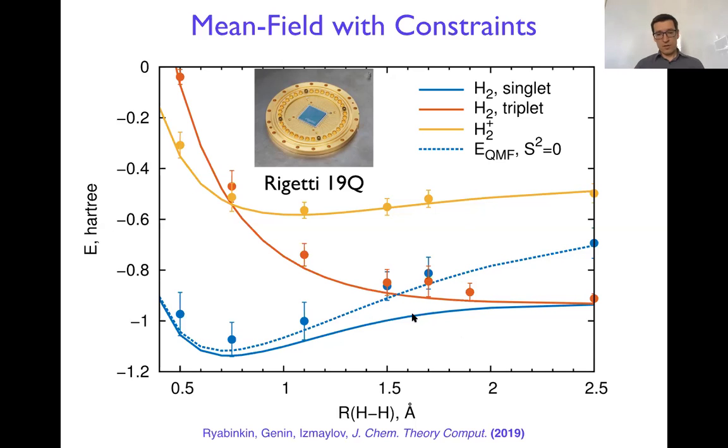So we have three states, singlet, all the blue data, triplet, again, neutral, all the red stuff, and the orange curve and dots, H2 plus. That's a cation.